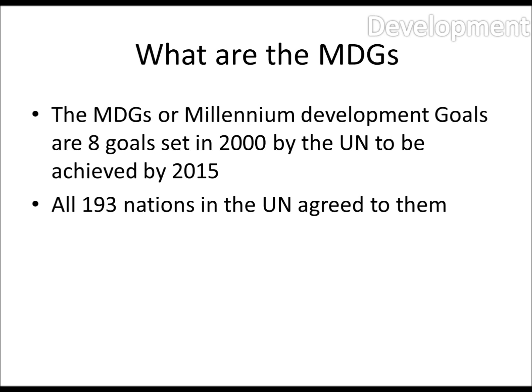So what are these MDGs? Well, MDGs or Millennium Development Goals are eight goals set in the year 2000 by the UN to be achieved by 2015. All 193 nations in the UN agreed to these.